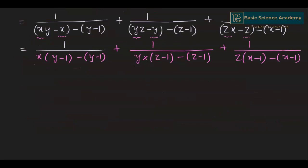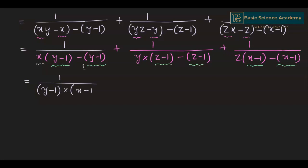Now we have (y minus 1) common in the first, (z minus 1) common in the second, and (x minus 1) common in the third. Taking these out gives 1 divided by (y minus 1)(x minus 1), plus 1 divided by (z minus 1)(y minus 1), plus 1 divided by (x minus 1)(z minus 1).